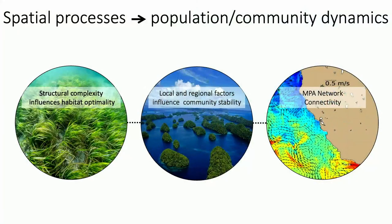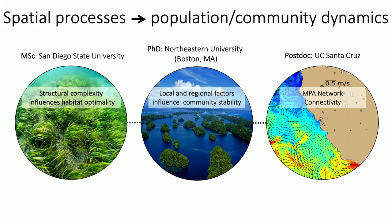The common thread that goes across all three of my research stories is thinking about spatial processes and how those influence both population and community dynamics of coastal fisheries or fish species. One feature we can think about across all three stories is that the spatial scale really differs depending on which story we're talking about.